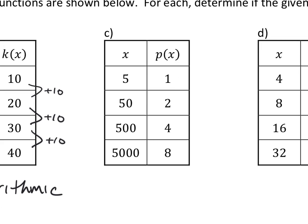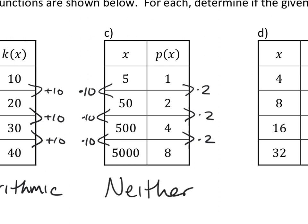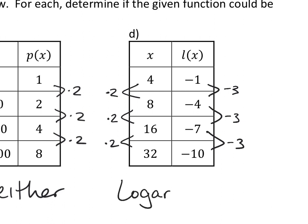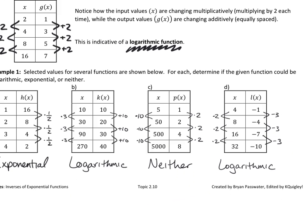For part c, the inputs are multiplied by ten and the outputs are also multiplied by two — both sides are multiplying, so this is neither exponential nor logarithmic. For part d, the input values are multiplied by two and the outputs subtract three every time, so that is a logarithmic function. We've now added logarithms to our repertoire alongside linear, quadratic, and exponential functions.